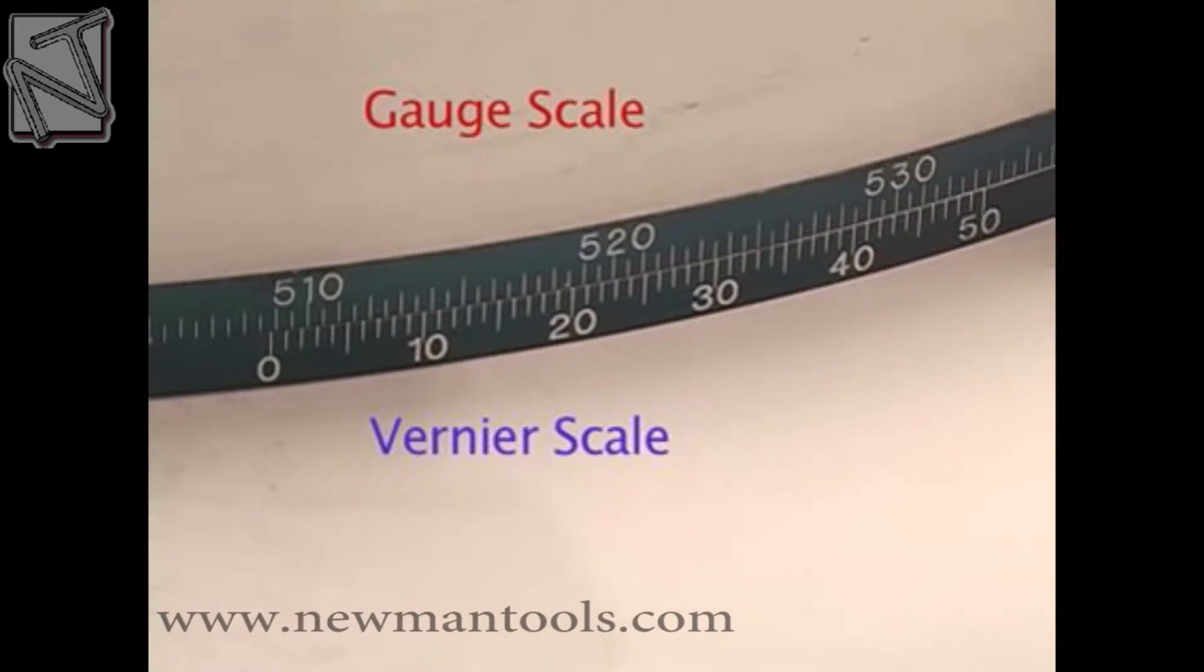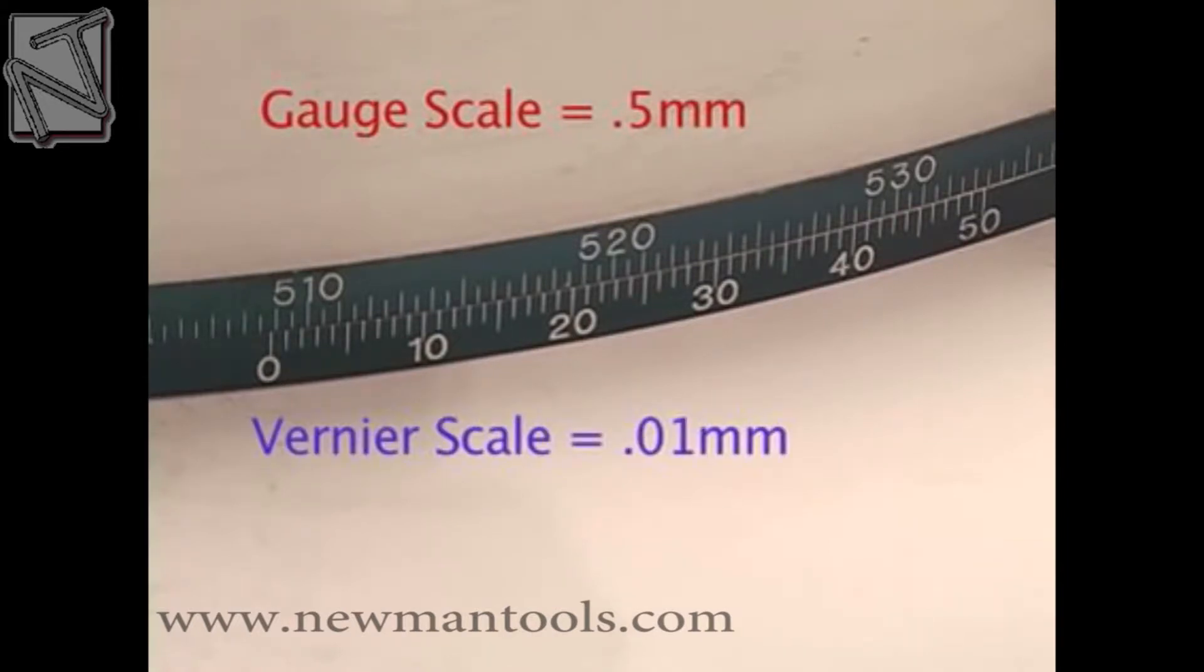Each line on the gauge member represents 0.5 mm, while each line on the veneer scale represents 0.01 mm.